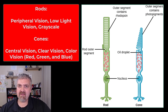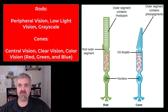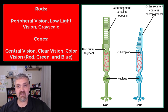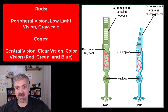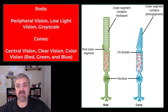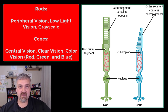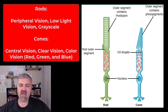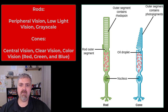Cones need a lot more light to work — that's their big downside — but they can see things in color. Using the three different types of cones we have — red, green, and blue — we can see up to a million different colors. They also see clear, defined edges, so if you want to clearly see something it takes a lot of light to trigger these cones. If you don't have one or more of these cones, you would be color blind.